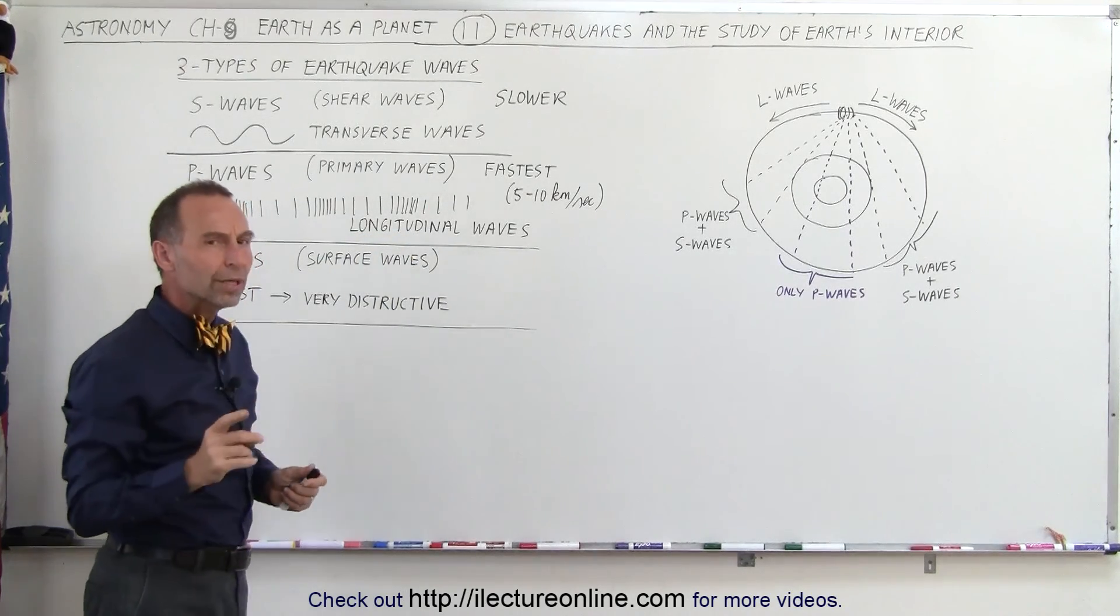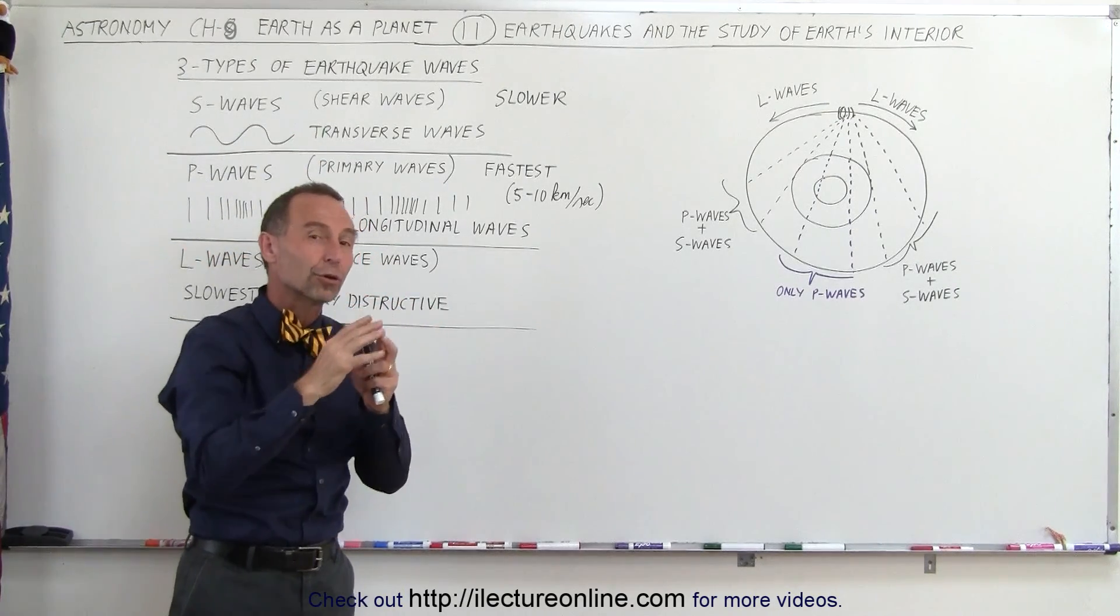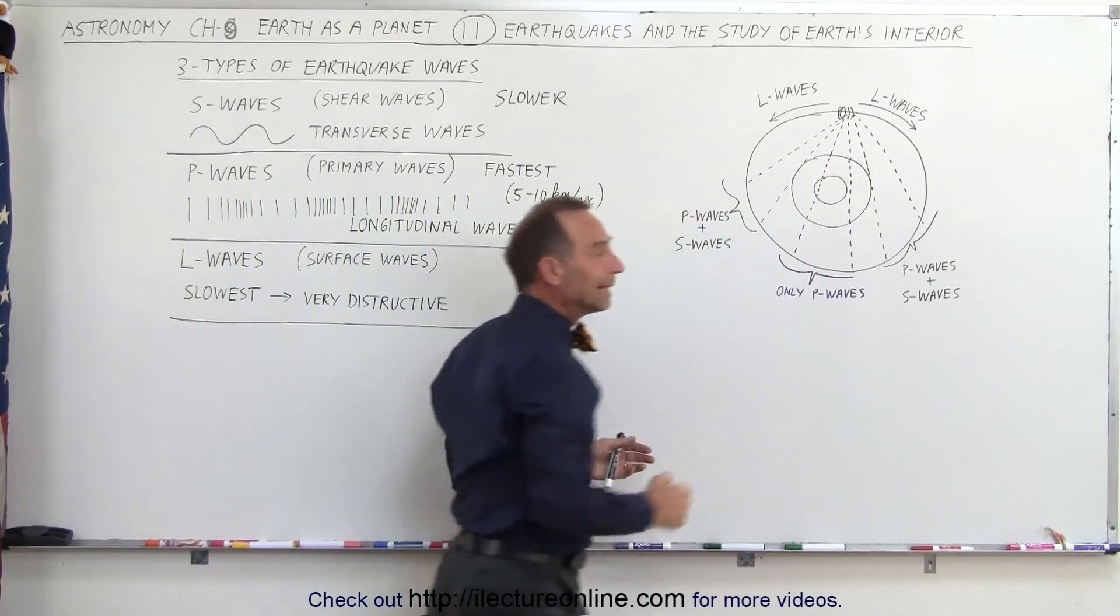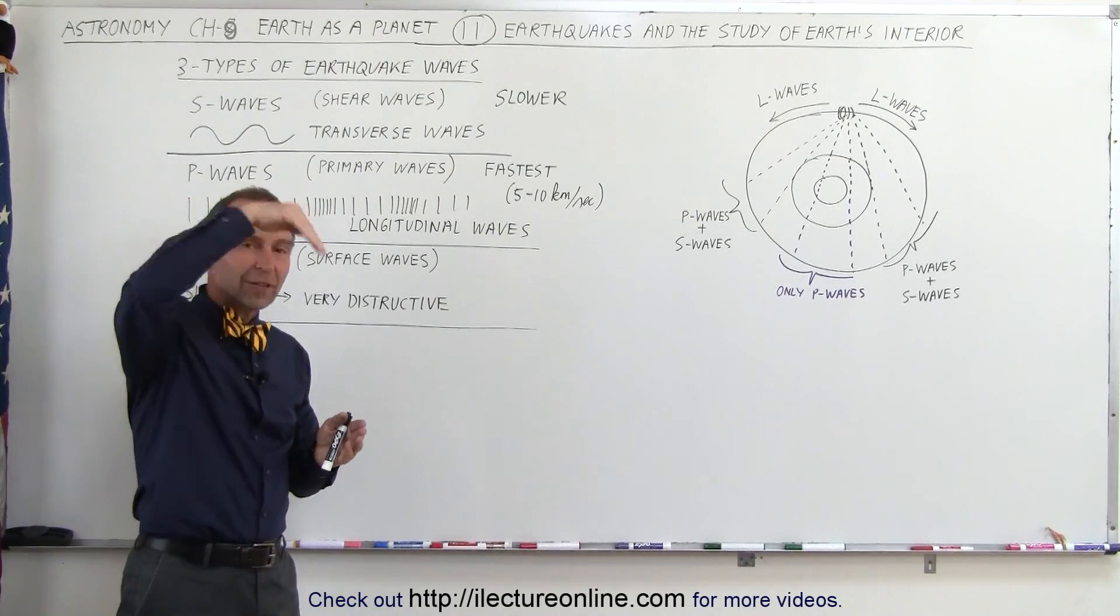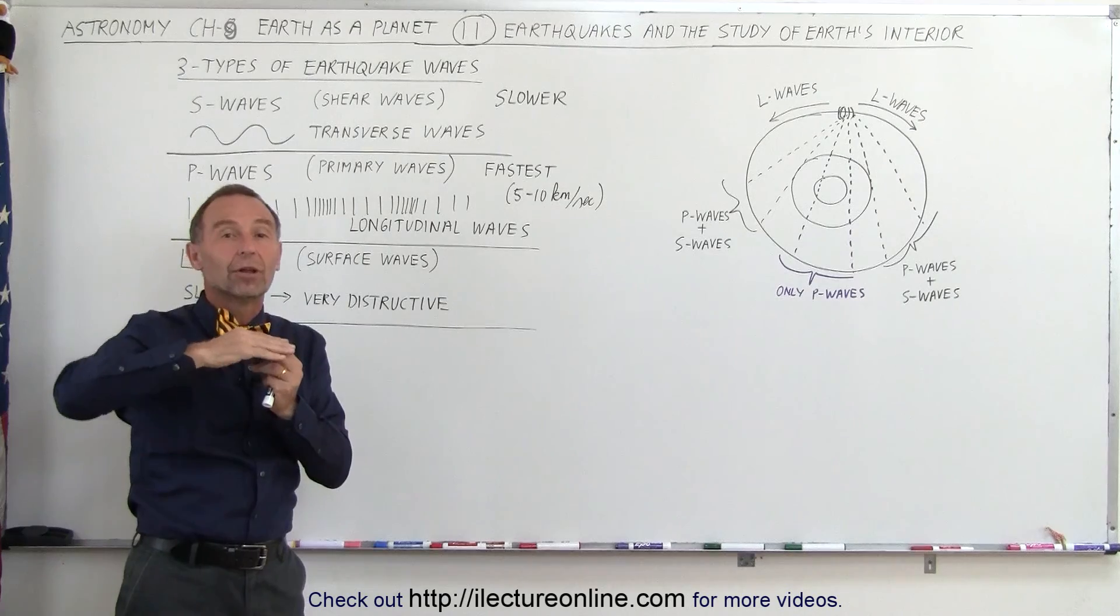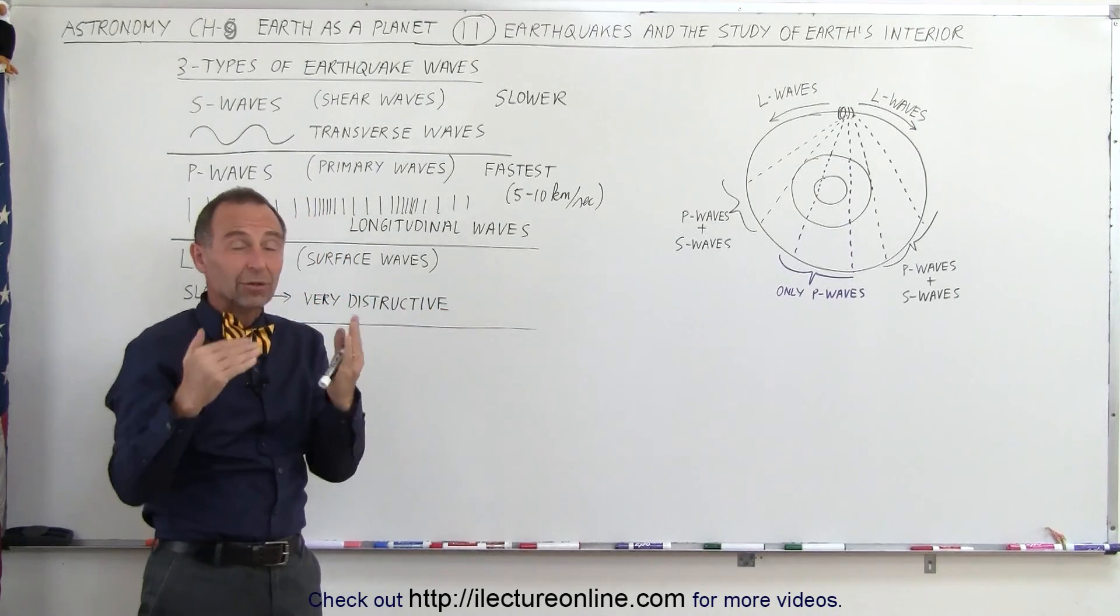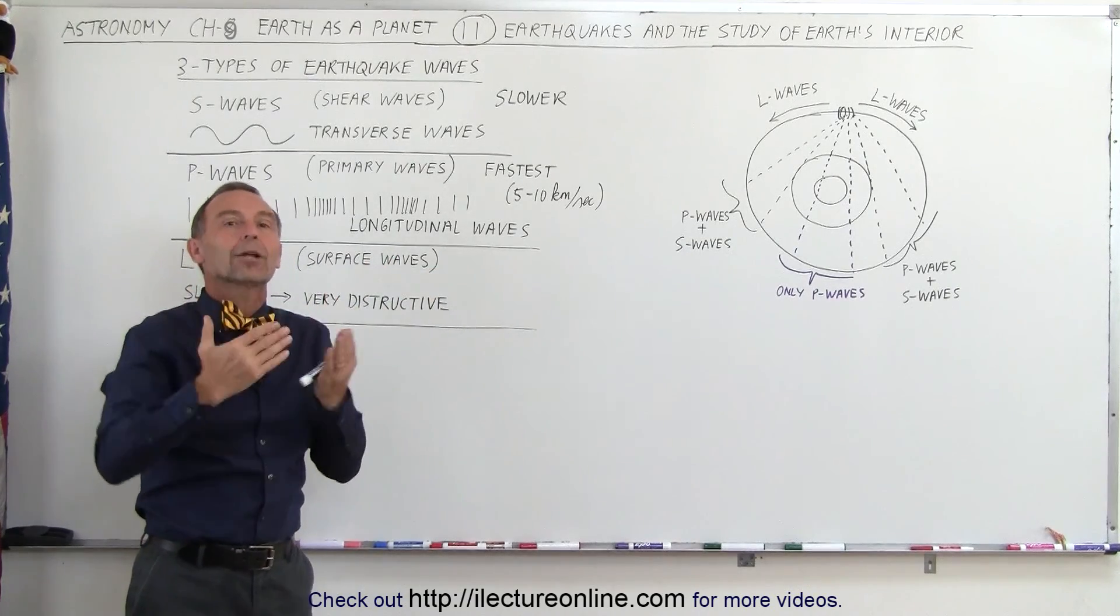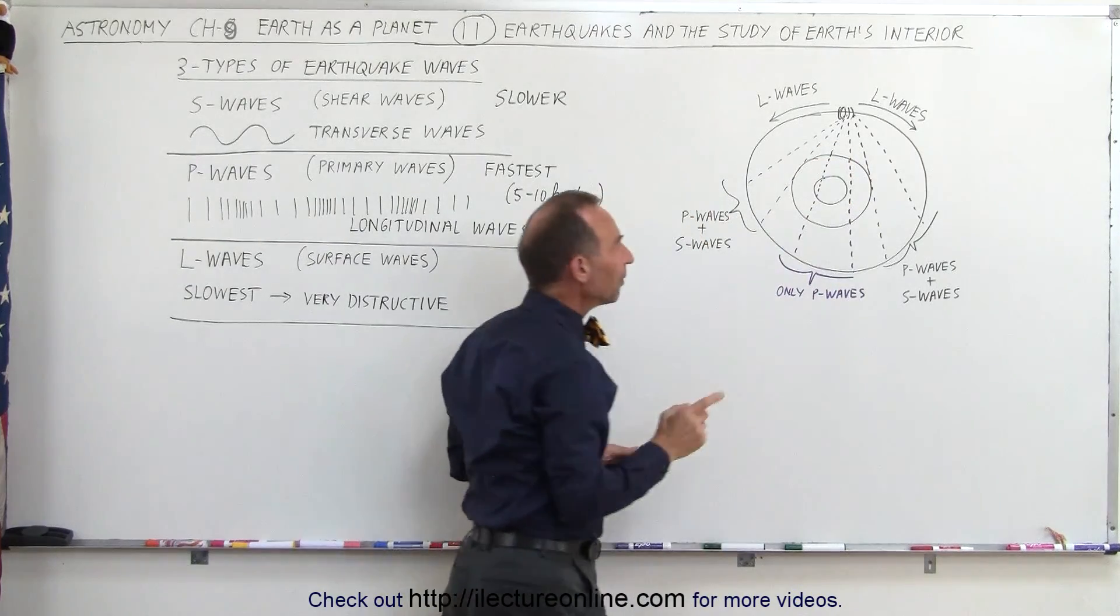Now the difference between them is that S waves, as they get to a portion of the interior of the Earth where there's a liquid, such as the liquid portion of the core, cannot travel through that portion. Because they are traveling like this, they need to move the material through which they travel in the perpendicular direction. When you get to a liquid, like water or in this case molten core, it cannot do that, so those waves tend to stop right at the border.